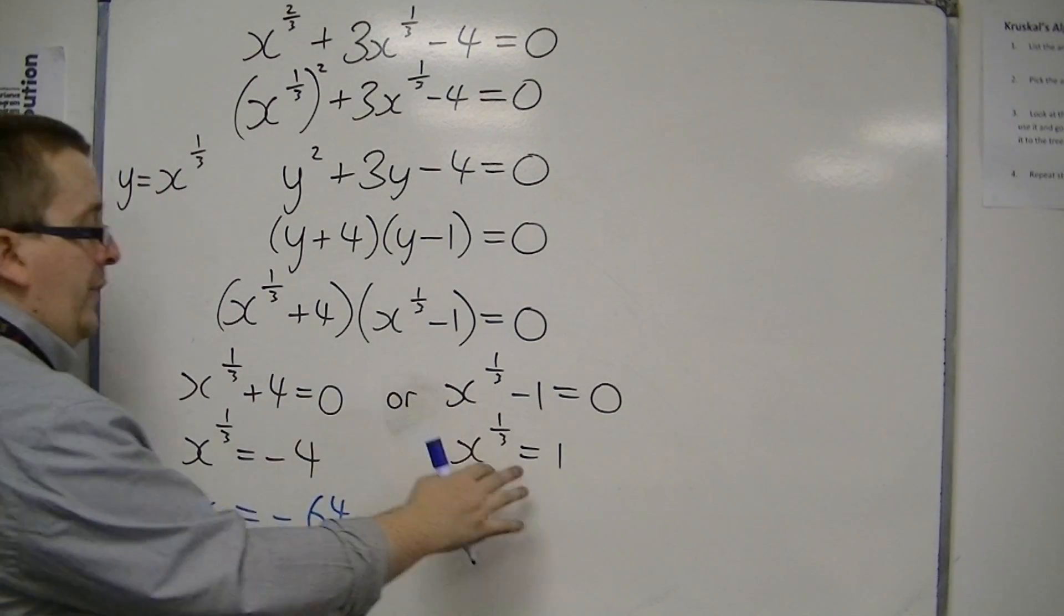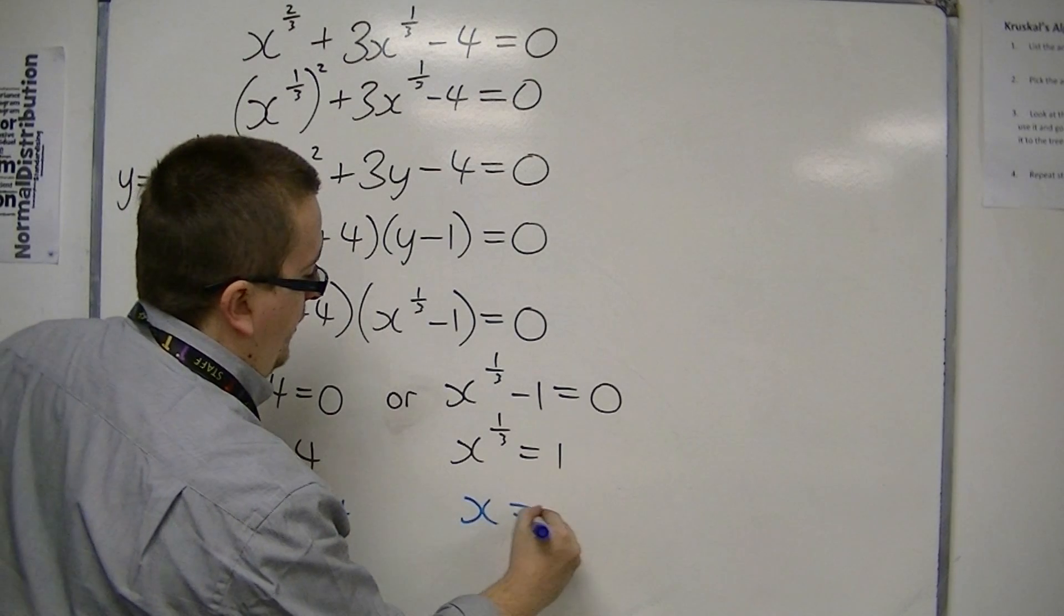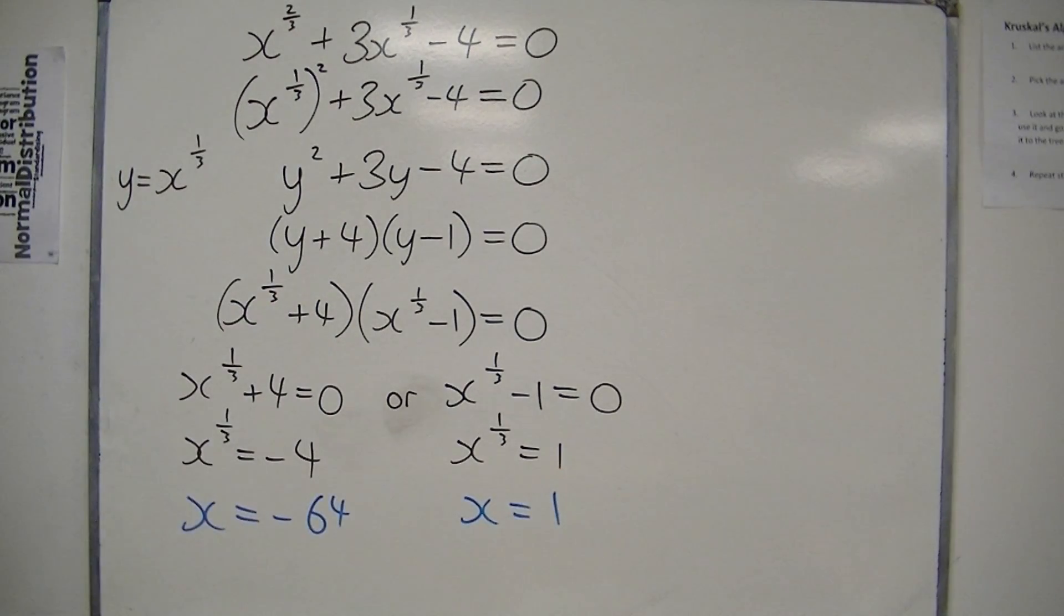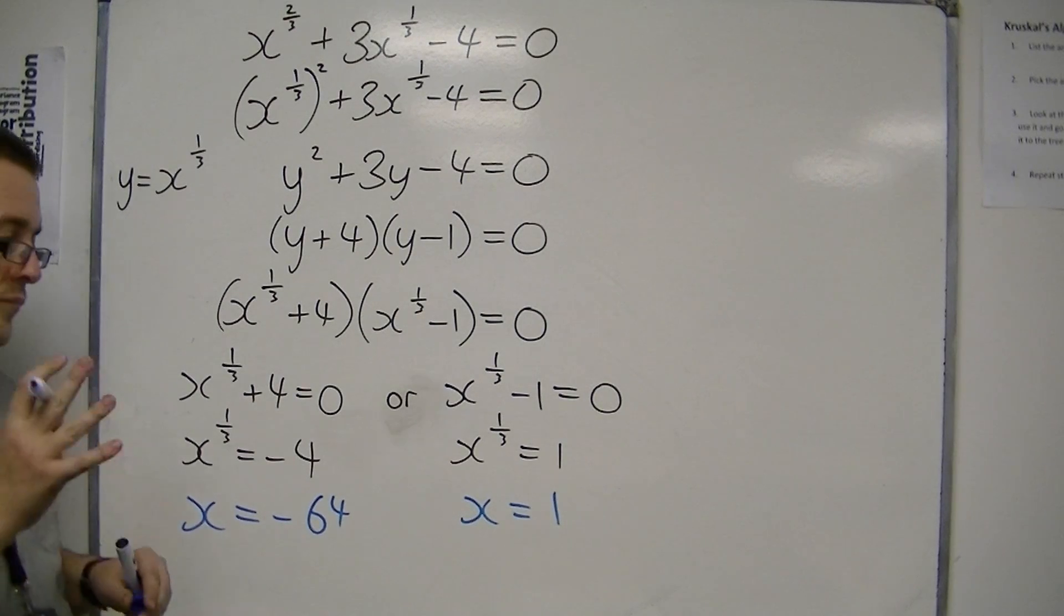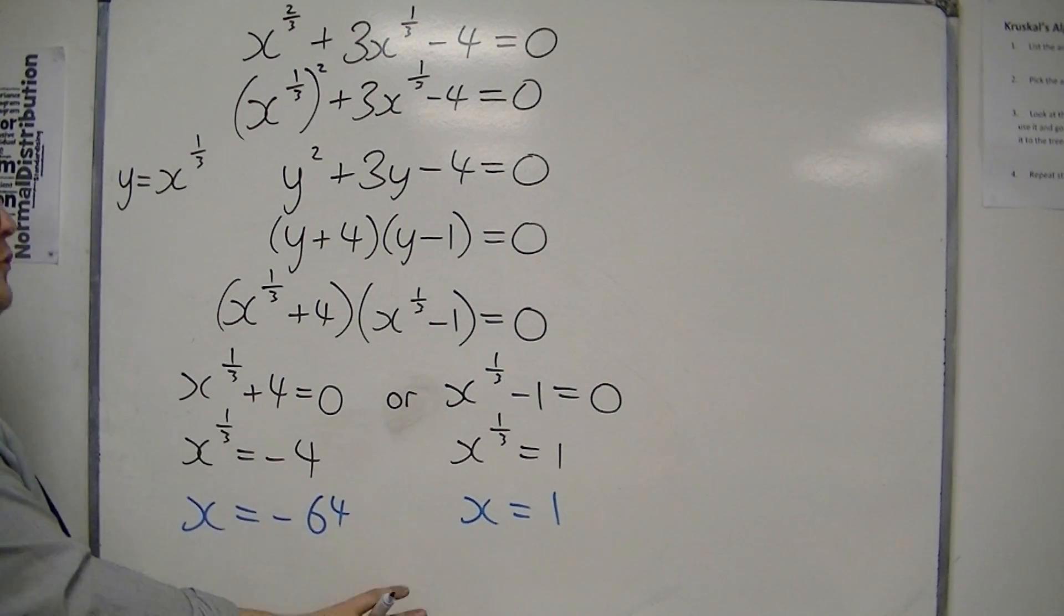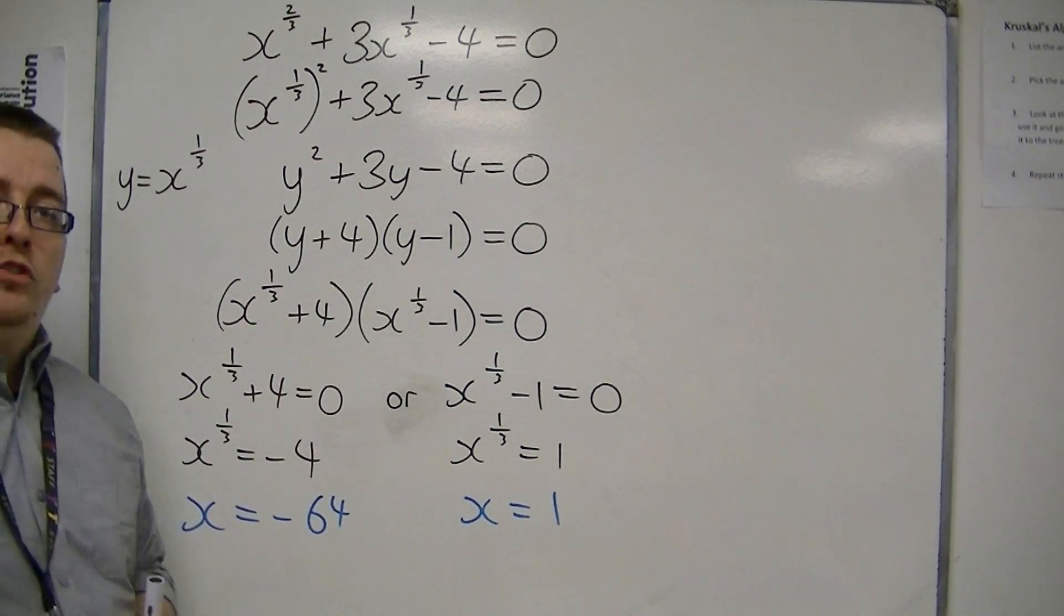And then on this side, I cube both sides, and I get x is equal to 1. So x is equal to 1 or minus 64 are the two solutions, two possible solutions, for the original problem.